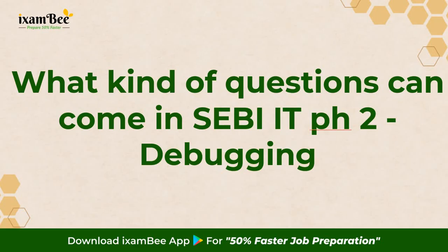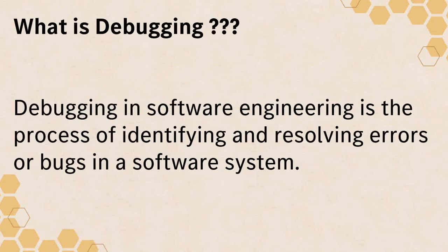In this particular video, the very first one, I am going to start with debugging. As the CBIT syllabus clearly mentions, they are going to give you debugging questions in the phase 2 examination. Before solving a debugging question we should understand what debugging is — it is a practice in software engineering where the process of identifying and resolving errors or bugs in a software system takes place.